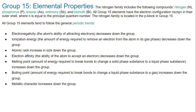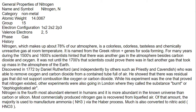All these group elements have the electronic configuration ns² np³ in their outermost shell. Due to this, they show general periodic trends: electronegativity decreases down the group, ionization energy decreases down the group, atomic radii increase in size, and melting and boiling points increase as we go down the group from nitrogen to bismuth. Metallic character increases down the group.